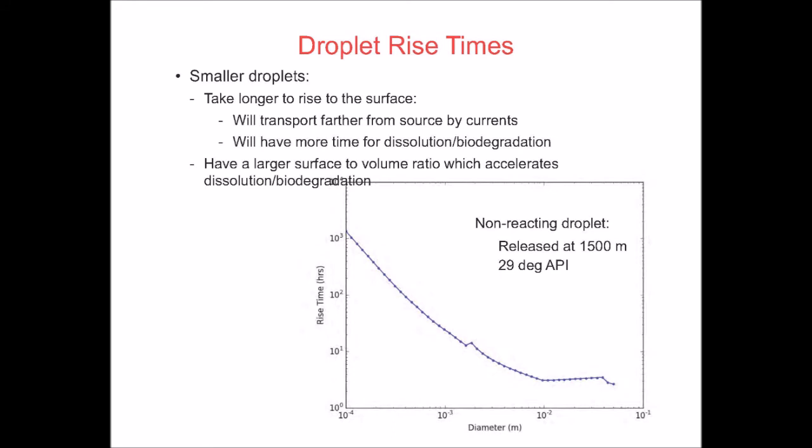Smaller droplets take much longer to rise to the surface. A 29°API oil droplet released at 1,500 meters depth with a diameter of one centimeter rises to the surface in about three hours. Making that droplet ten times smaller — one millimeter — increases rise time to close to 20 hours. Droplets of 0.1 millimeters take over 1,000 hours to rise to the free surface. During that longer rise time, there is more time to dissolve into the water column, and lateral ocean currents can push the droplet much farther downstream.